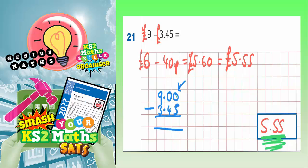So 0 take away 5 we can't do. So we borrow from the next column. But the next column is also 0. So we can't borrow from there. So we need to borrow from the 9. So cross out the 9 and make it an 8. And the one we've borrowed, make that first 0 into 10.